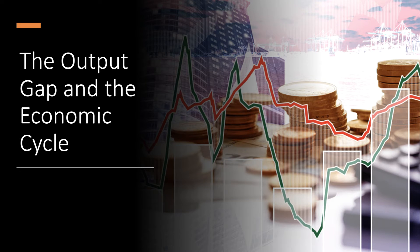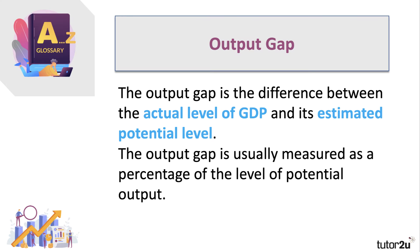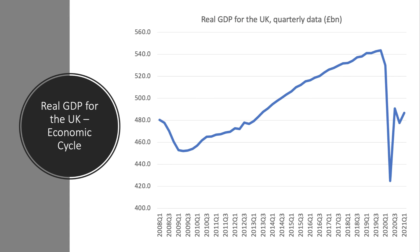Welcome to a macro video. We're going to look at the concept of the output gap and how it links to the economic cycle. The output gap is a macroeconomic concept — it's the difference between the actual level of a country's GDP, the value of goods and services produced within an economy, and the estimated potential level of GDP. We normally express the output gap as a percentage of the level of potential output.